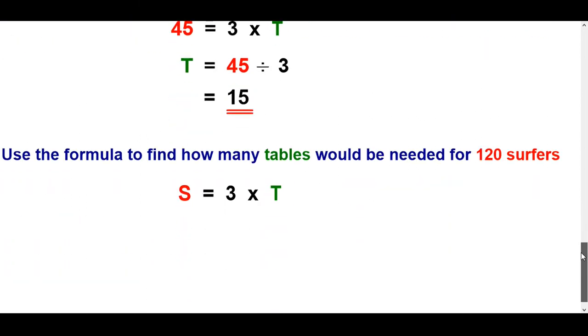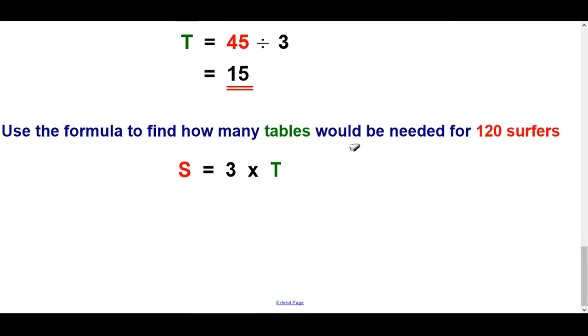Let's look at that idea again. So use the formula to find how many tables would be needed for 120 surfers. So this bit's 120 isn't it? And you're trying to think 3 what makes 120. Again do the opposite of times here which is divide. So you divide by 3 and hopefully you've come to the conclusion that's 40. 12 divided by 3 is 4 and that down to 0 is 40.